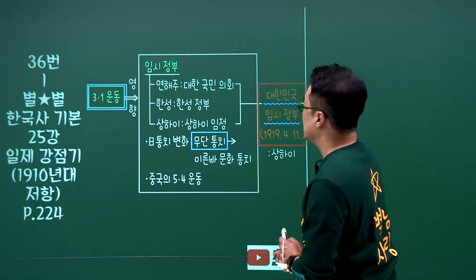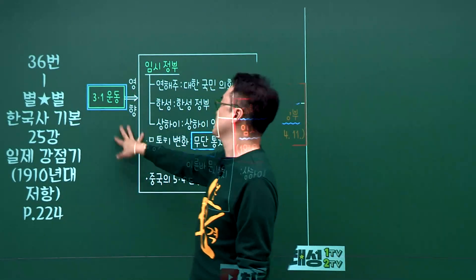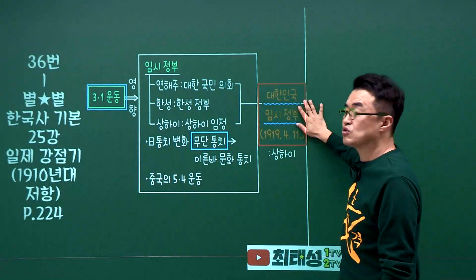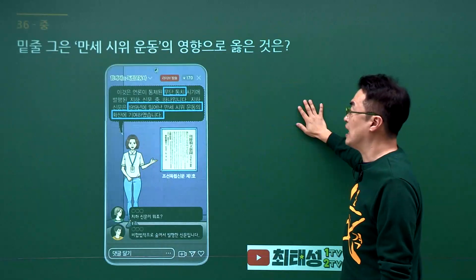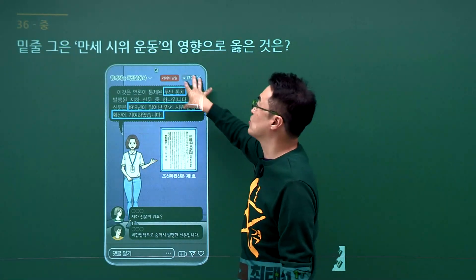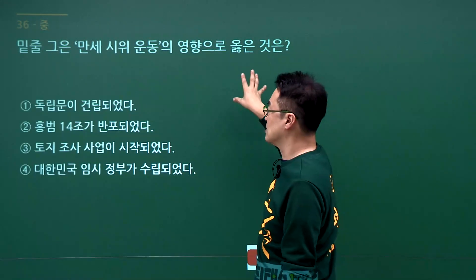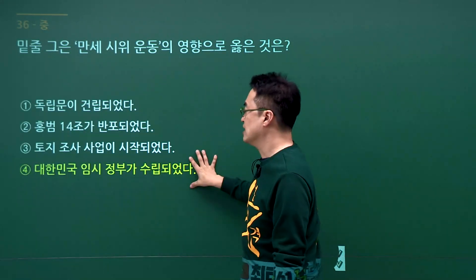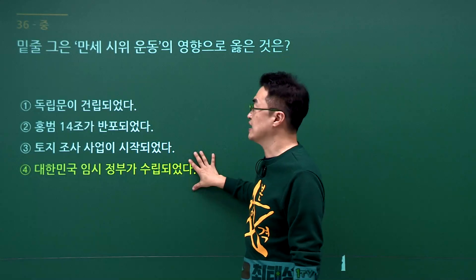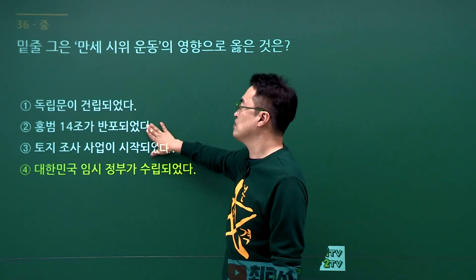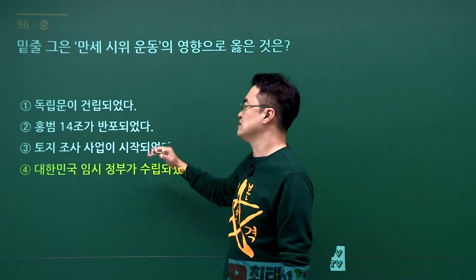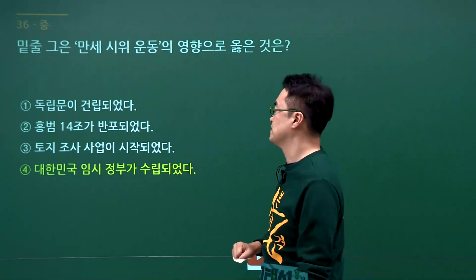3.1운동의 결과 문제입니다. 3.1운동의 결과로 대한민국 임시정부가 수립되었습니다. 문제에서 무단통치, 1919년 3.1운동의 영향으로 오른 것은 대한민국 임시정부가 수립된 것입니다. 4번을 고르시면 됩니다. 독립문과 홍범 14조는 2전, 토지조사도 2전입니다. 정답은 4번입니다.